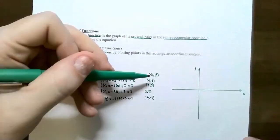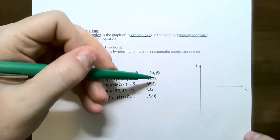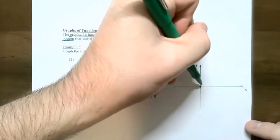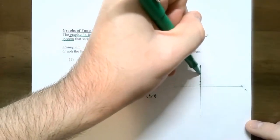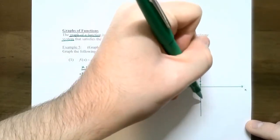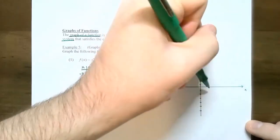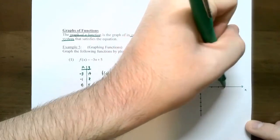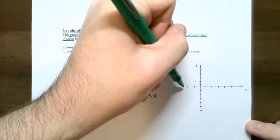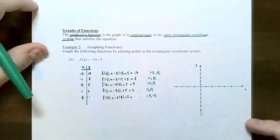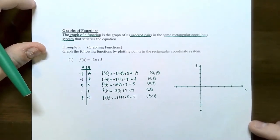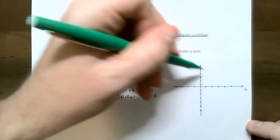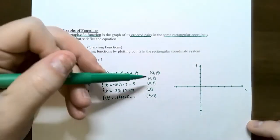Notice that the y values are fairly large - 14, eight, and also negative seven - so I'm going to count by two on the y-axis. The x values can count by ones. Make sure your tick marks are evenly spaced; otherwise the graph might look a little skewed.